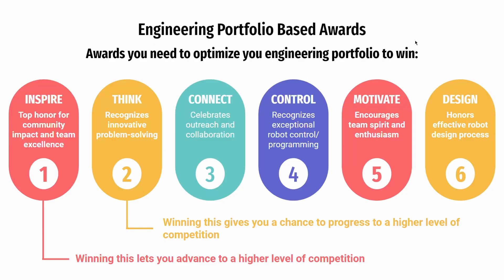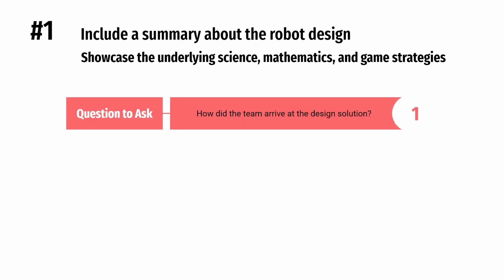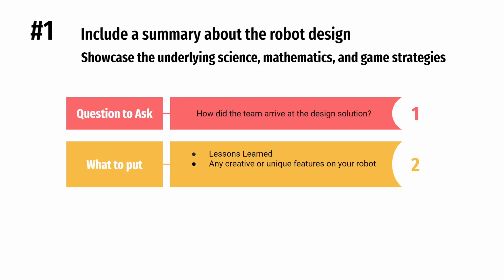To begin with, in FTC, the engineering portfolio is crucial for qualifying for the Inspire, Think, Connect, Control, Motivate, and Design Awards. To compete effectively, your portfolio should include a summary about the robot design. Specifically, you want to make sure to have engineering content describing examples of the underlying science, mathematics, and game strategies. Try to answer questions like how did the team arrive at the design solution, and provide examples that show the team has a clear understanding of the engineering design process. One way to do this is by including examples of lessons learned and the current status of the team and their robot design. Also make sure to describe any creative or unique features on your robot.